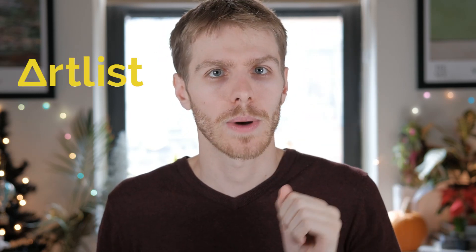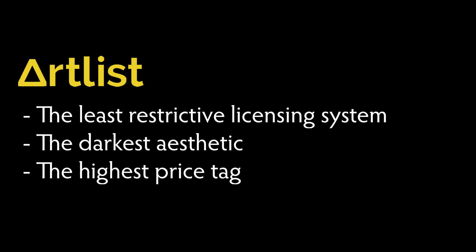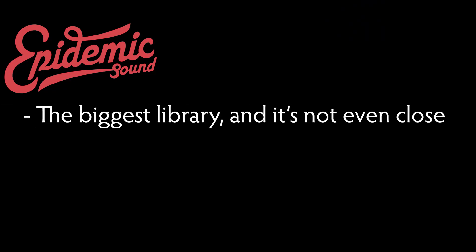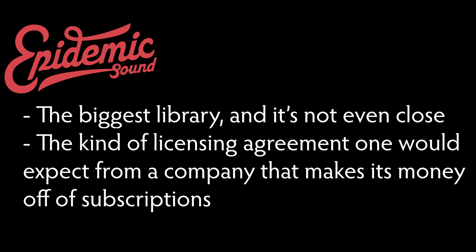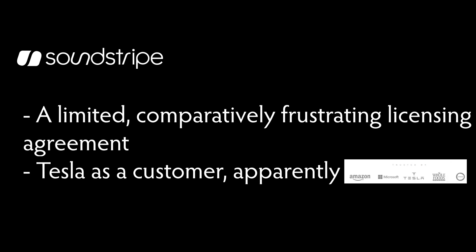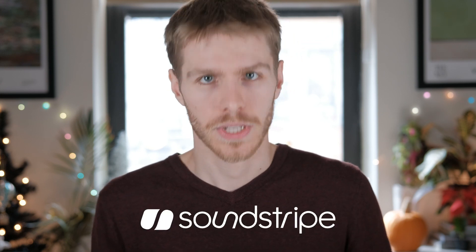So the question of what you need this for is critical, and it's obviously different for every person. Let's break down three bullet points each. Artlist.io has the least restrictive licensing system, the darkest aesthetic, and the highest price tag if all you want is to put music behind your YouTube videos. Epidemic Sound has the biggest library — and it's not even close — the kind of licensing agreement one would expect from a subscription service, and terrible design. Soundstripe has a limited, comparatively frustrating licensing agreement, Tesla as a customer apparently, and the lowest annual fee. So what did I ultimately go with? At least for now — Soundstripe.